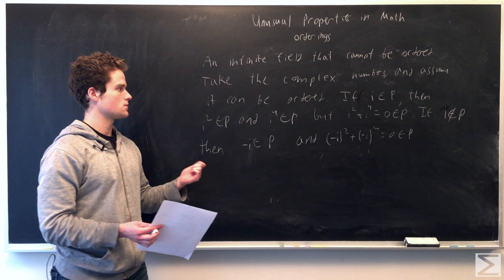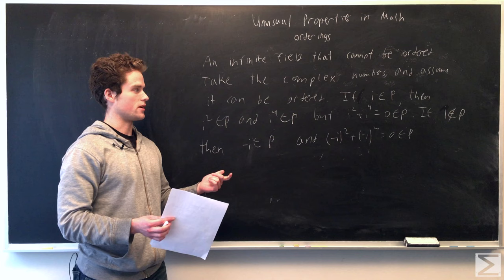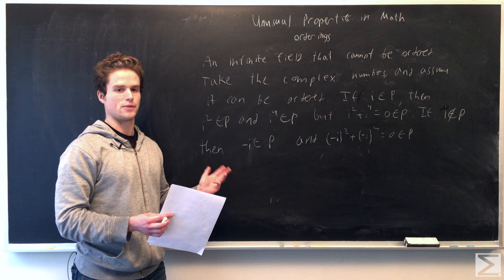So i squared plus i to the fourth equals zero. But it's closed under addition, so that implies zero is positive, but we can't have that. By one of the axioms, if the element is zero, then it is not in the set.